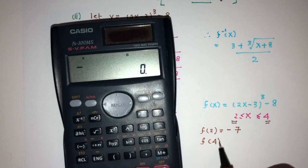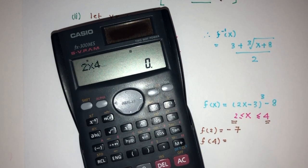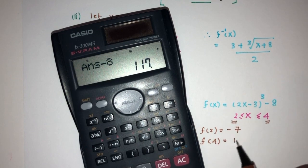Now, f of 4, that will be what? So, 2 times 4 minus 3 power 3 minus 8. That will be 117.